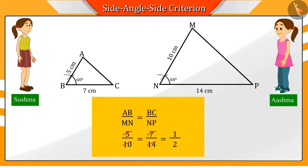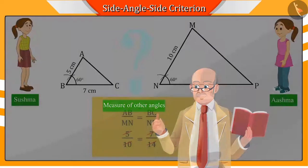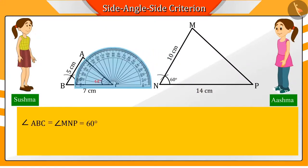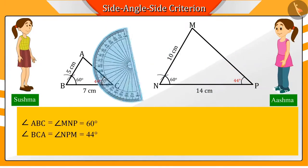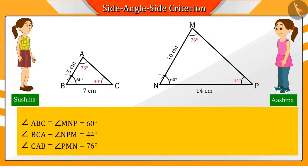Correct. Now the teacher asks them about the measurement of other angles. Both of them measure the angles using a protractor and they find out that the corresponding angles of the triangle are equal.